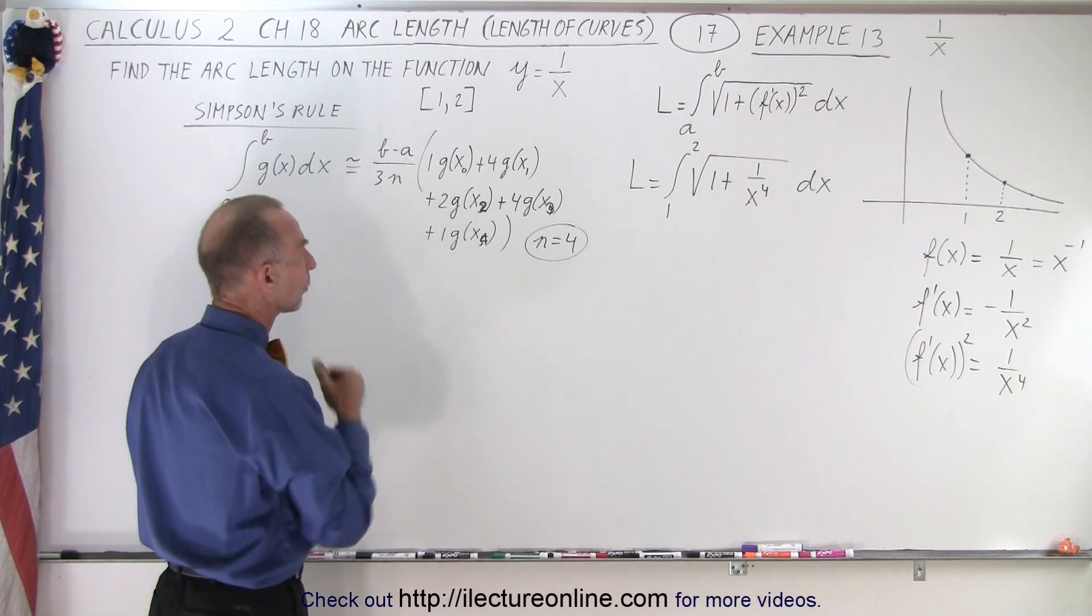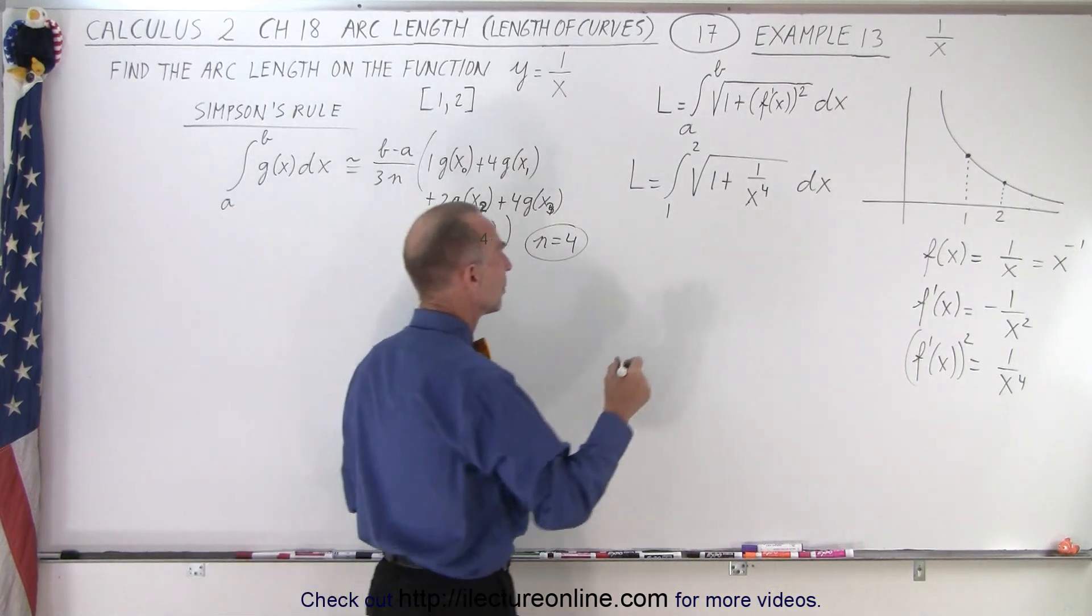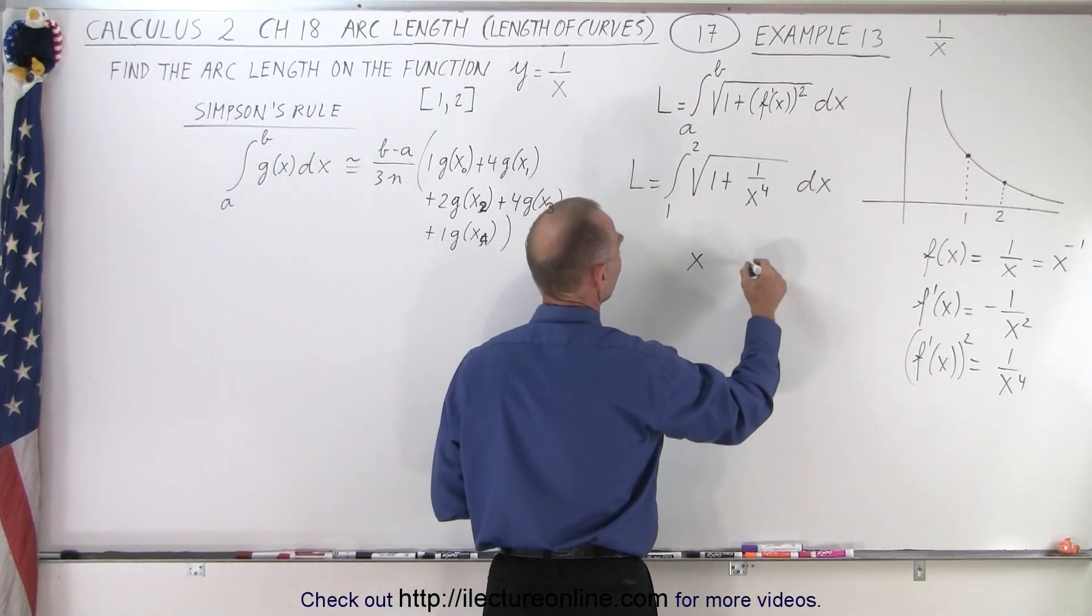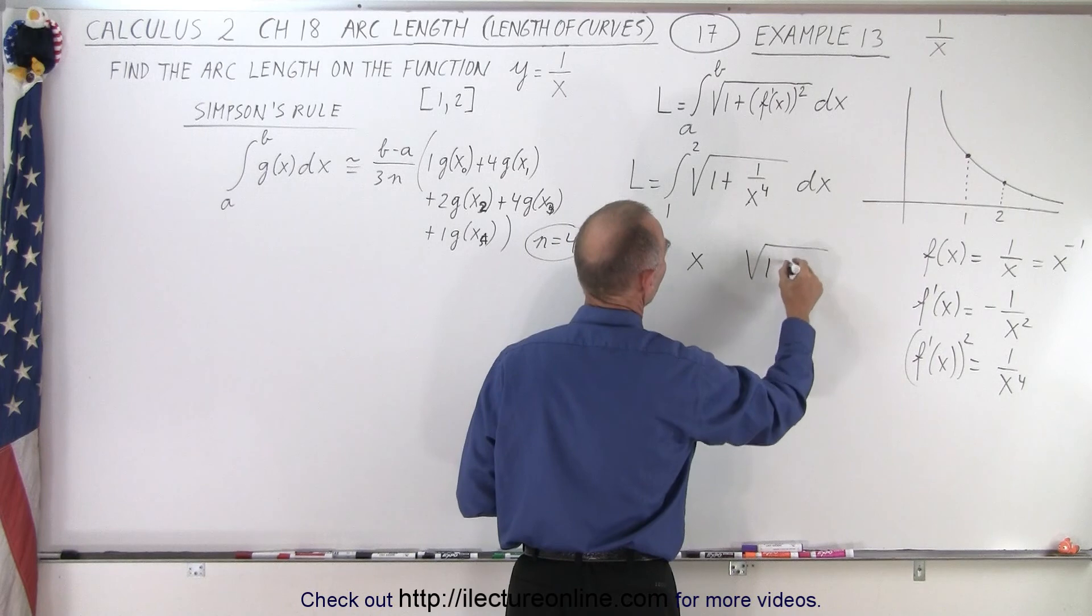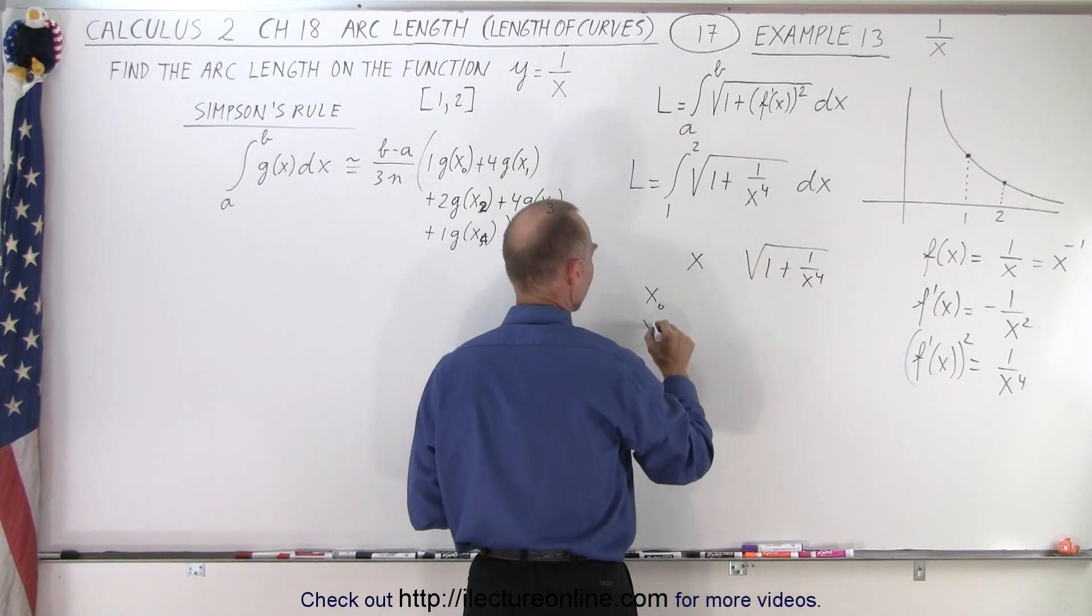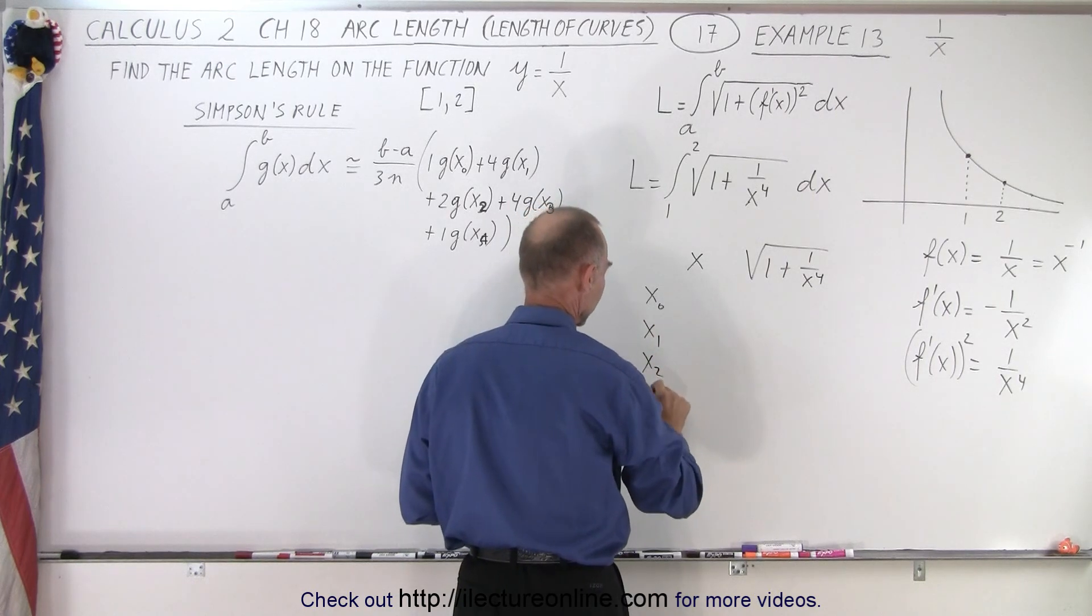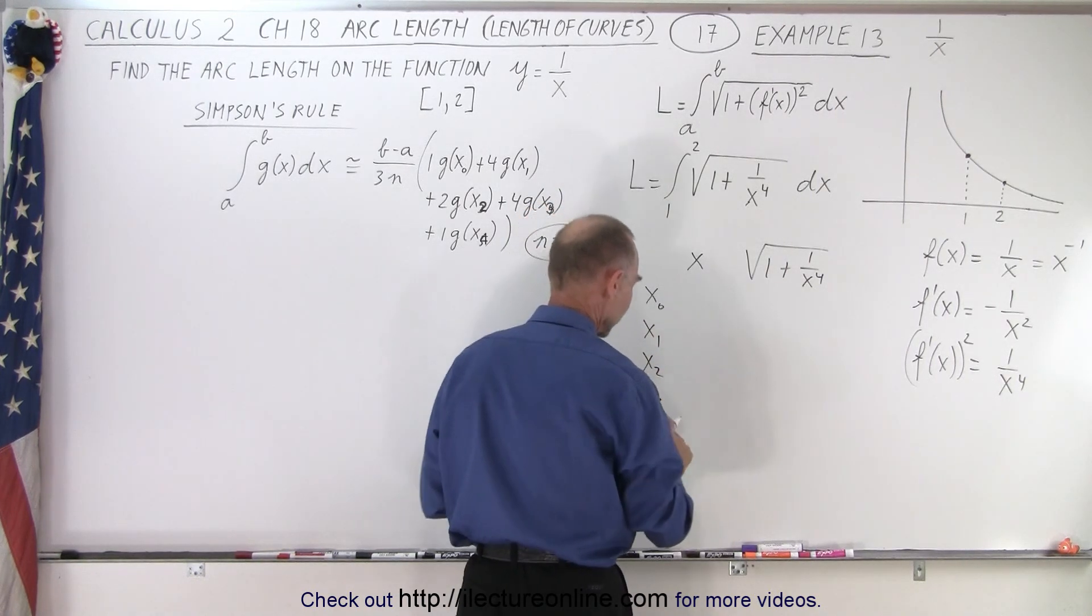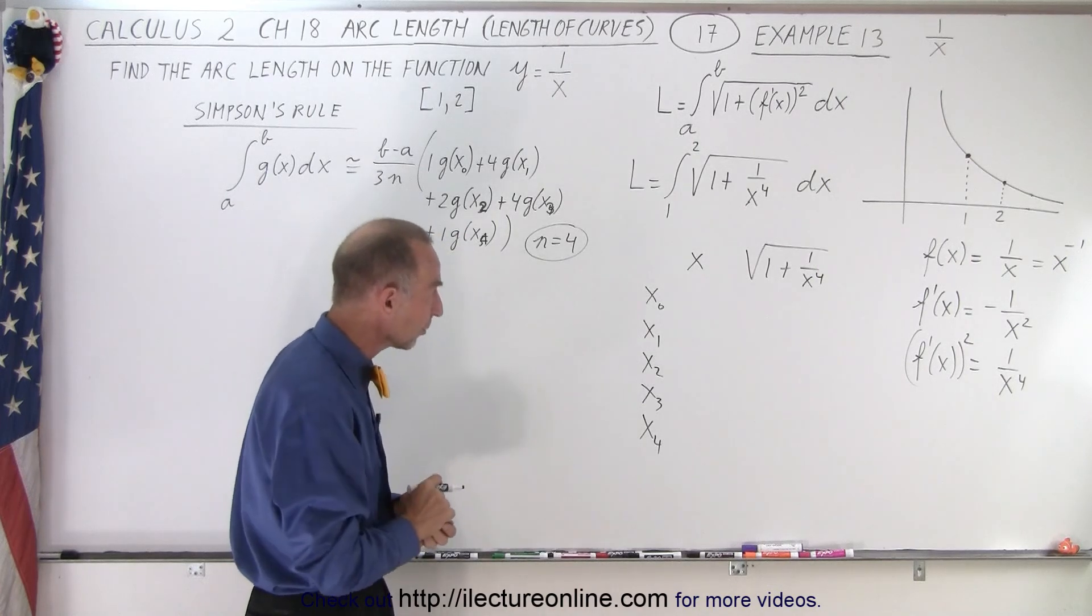So again, we're going to let n equals 4. What we need is we need x and then the square root of 1 plus 1 over x to the fourth. And we're going to have x sub 0, x sub 1, x sub 2, x sub 3, x sub 4. We have the two endpoints and three points in the middle for four segments.